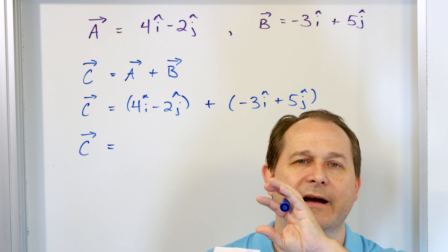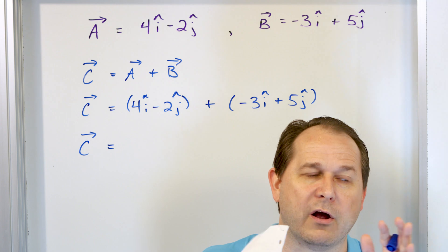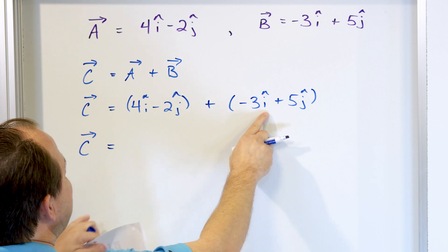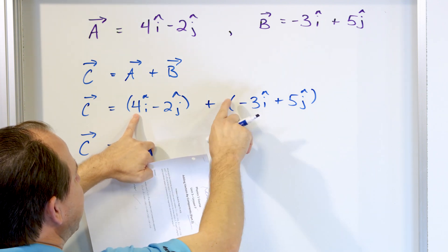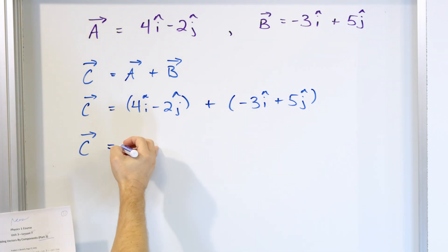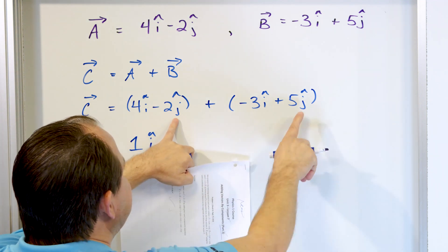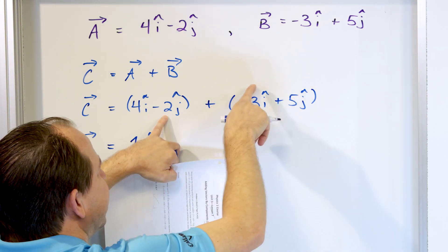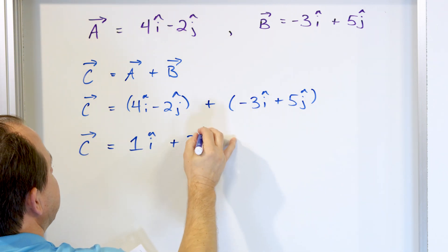All the unit vectors in the i direction are like terms, and all the terms in the j hat direction are like terms. So we have an i hat here and an i hat here, giving us 4 plus negative 3, which is 1i. In the j direction, we have negative 2 and positive 5, giving us plus 3 in the j direction.